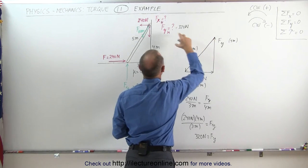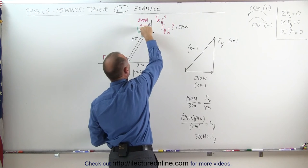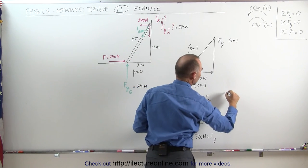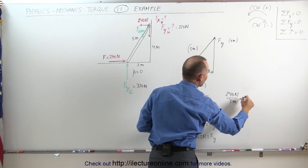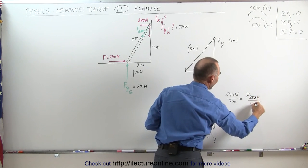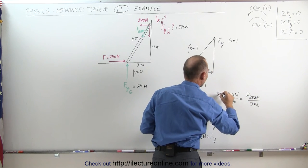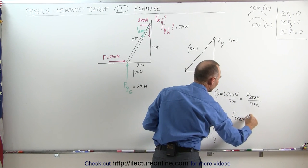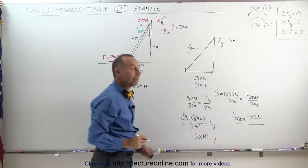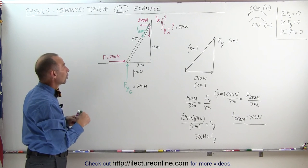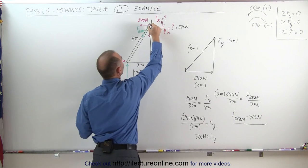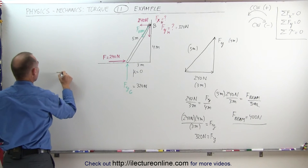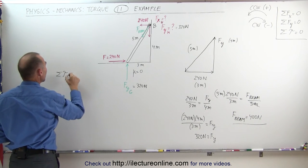We can also find the net diagonal force — the force of the beam pushing against the hinge. Using the same ratio: 240 newtons over 3 meters equals the force on the beam over 5 meters. Multiplying: 80 times 5 gives 400 newtons. So the force on the beam equals 400 newtons. Now we can also think about this in terms of torques. If we put our pivot point at the hinge, call it point B, then since everything is in equilibrium, the sum of all torques relative to point B must equal zero.